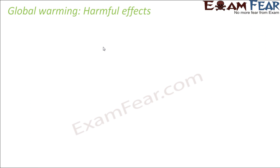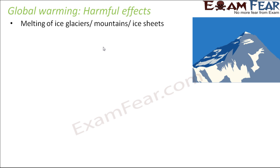Now let us look at the harmful effects of global warming. When the temperature increases, wherever there is snow or ice — glaciers, mountains, ice sheets — they will start melting. This melting will result in destruction of the ecosystem of that particular region, because there are many organisms which live in extremely cold climates and those organisms will die.